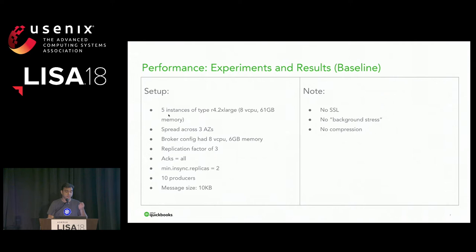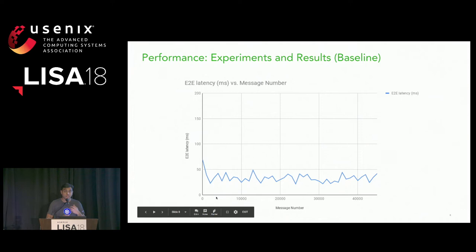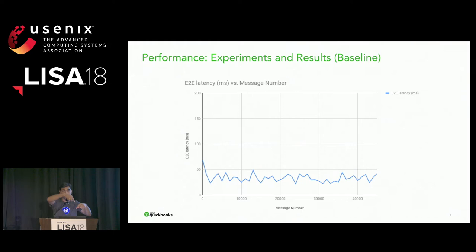We did a basic performance experiment with five Kafka brokers spread across three AZs. The broker config had eight vCPUs and six gigs of memory, replication factor of three, with all three replicas on three different EBS volumes for greater availability, ten producers, and a message size of 10 KB. With this, we measured the end-to-end latency.